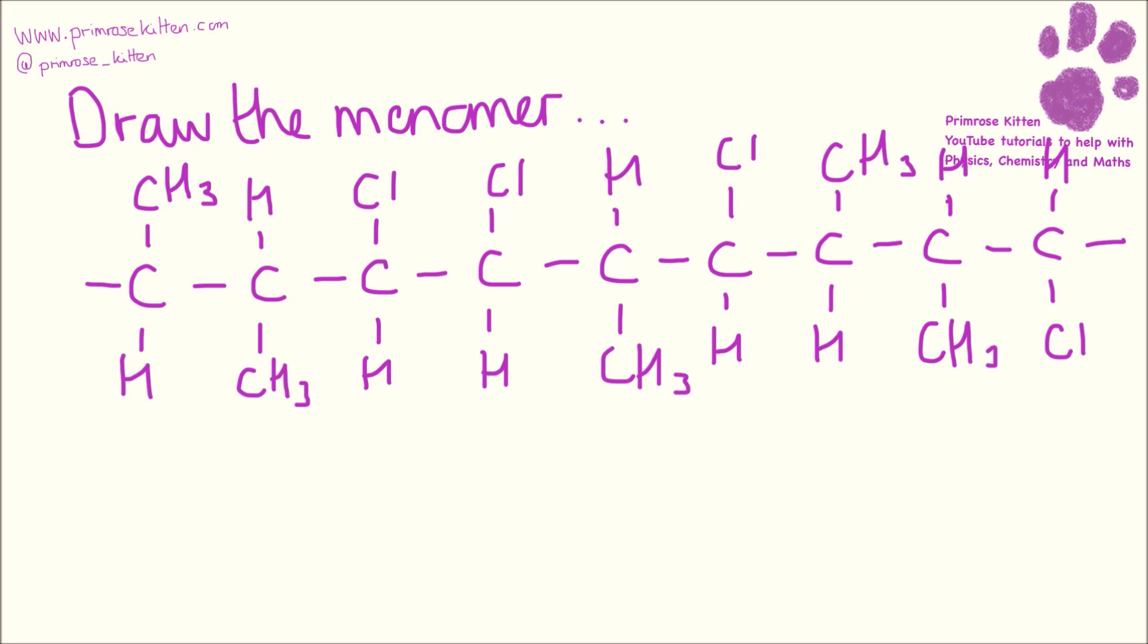And because this is the A-star question right at the end, we are expecting the examiners to be meanies. Now a monomer is a repeating unit, but it doesn't have to be the same way around and it doesn't have to be the right way up.